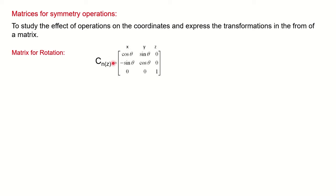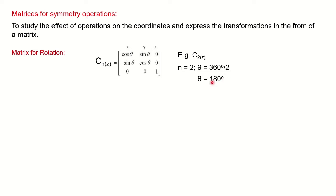The rotation matrix is: [cos θ, sin θ, 0; −sin θ, cos θ, 0; 0, 0, 1]. You can learn this formula for all rotational axes with respect to the Z axis. For example, for C2 with respect to the Z axis, N = 2, so θ = 360°/2 = 180°. Substituting: cos 180° = −1, sin 180° = 0, giving us the matrix for C2Z. Since the operation is with respect to Z, the Z coordinate has no change, so Z has +1.